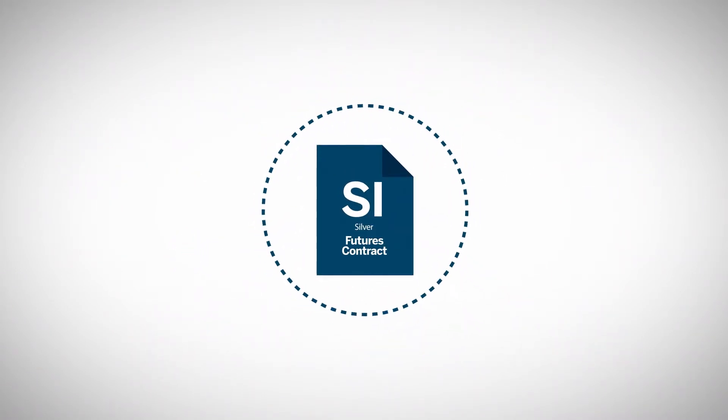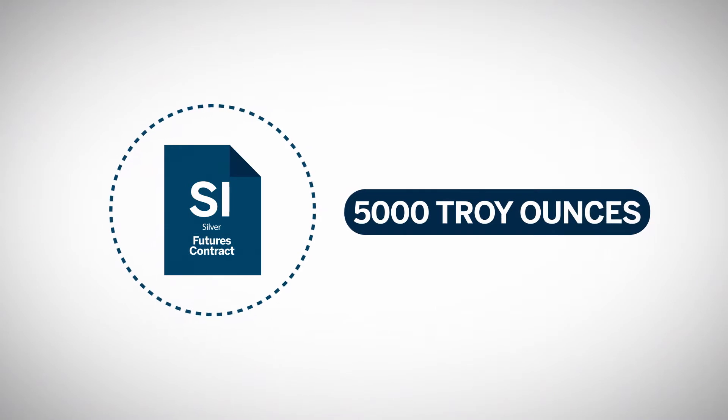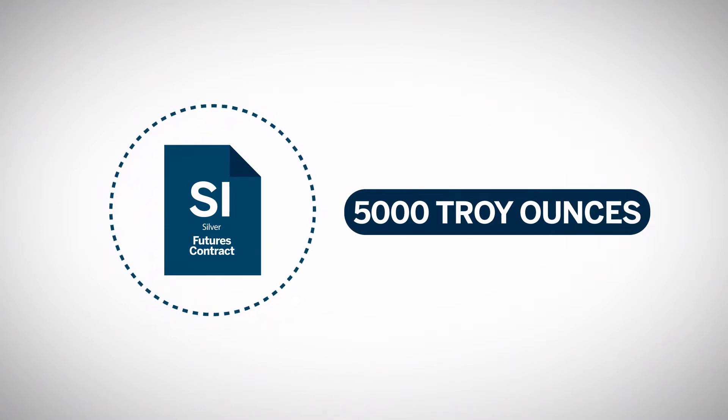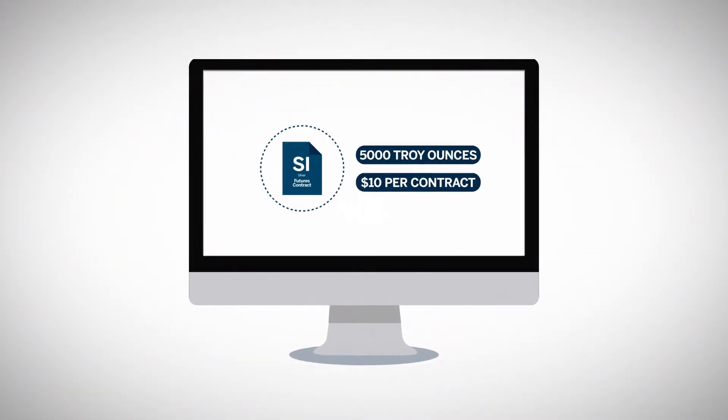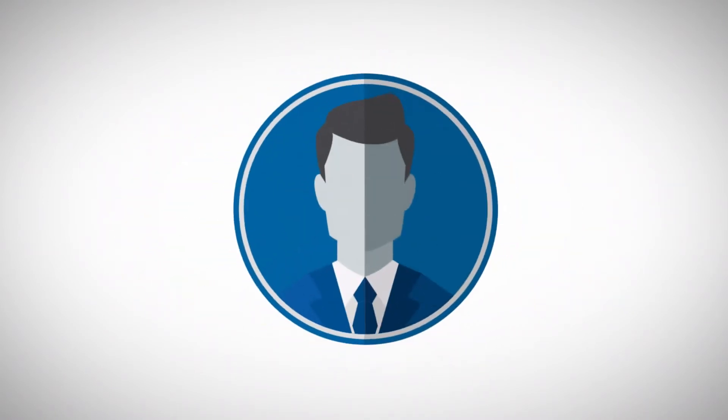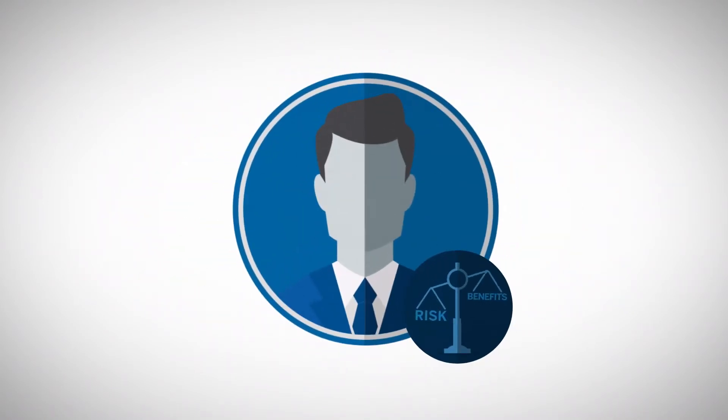Each NYMEX Silver Futures contract represents 5,000 troy ounces of deliverable silver, with a minimum tick price of $10 per contract. The contract trades electronically nearly around the clock, six days a week, and traders are able to leverage substantial margin efficiencies when gaining exposure to this liquid market.